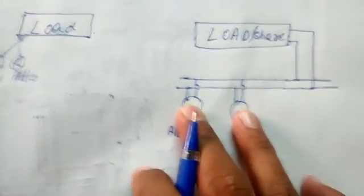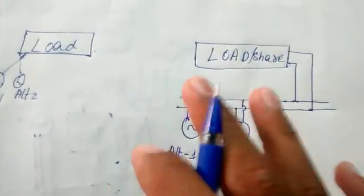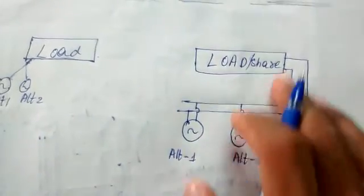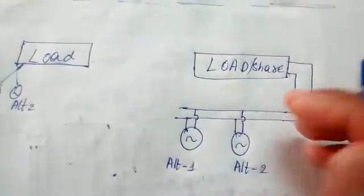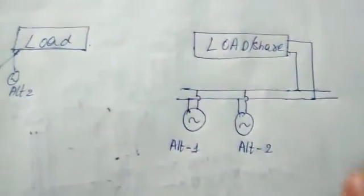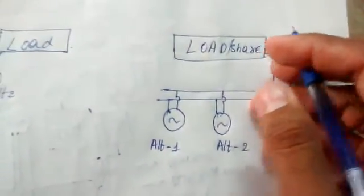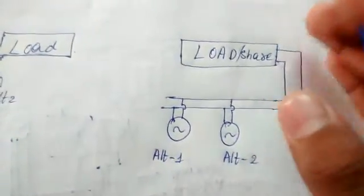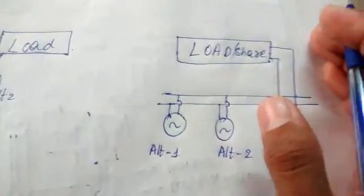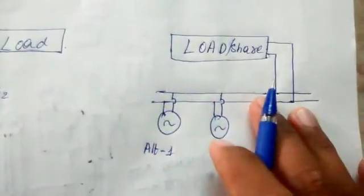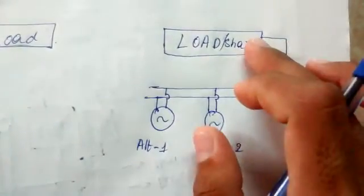These two alternators produce some voltage and EMF. This voltage supplies loads such as home appliances — lights, TVs, refrigerators, air conditioners, etc. The alternators are running and supplying this voltage.